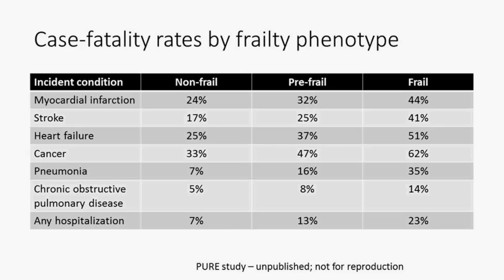What we did find in PURE, consistent with the grip strength findings, is that being frail increases your risk of dying if you do develop a disease. Incident conditions are listed on the left of the slide, showing case fatality rates for non-frail, pre-frail, and frail individuals. The more frail you are, the higher your risk of dying should you develop some sort of intercurrent illness or disease.